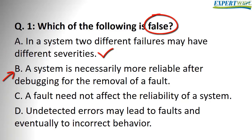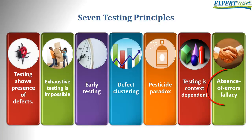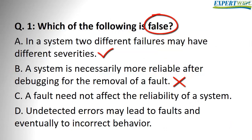Option B: a system is necessarily more reliable after debugging for the removal of a fault. This is confusing, but it is actually false. Fixing a bug might introduce more bugs, which is why we need retesting and regression testing. Also, reliability means the system is working and you can depend on it — fixing a fault doesn't necessarily mean the system is more reliable. Even a system with no faults doesn't mean we have a reliable system if it doesn't perform what the customer wants.